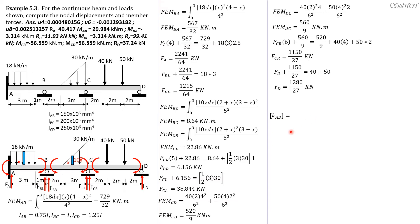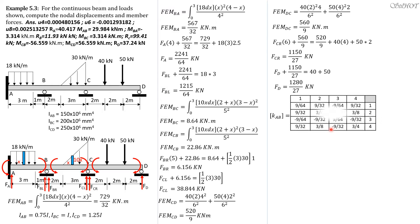Next, for the stiffness matrix of AB: the first entry is 12 times 0.75 over 4 cubed, giving 9 over 64. The second entry is 6 times 0.75 over 4 squared, giving 9 over 32. The diagonal entry for rotation is 4 times 0.75 divided by 4, which is 0.75 or 3 fourths. The off-diagonal entry is one-half of 3 fourths, which is 3 eighths. The next row is the negative of the first row, and the last row is the second row with entries in the second and fourth columns interchanged.